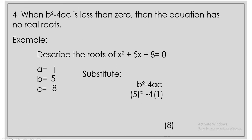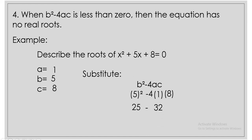Let us now simplify it. 5 squared is 25. 4 times 1 times 8 is 32. So we have 25 minus 32 is negative 7. Since b squared minus 4ac is less than 0, meaning the answer is a negative number, then the equation has no real roots.